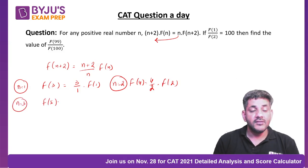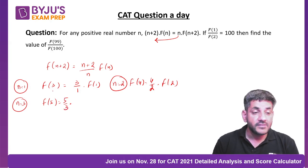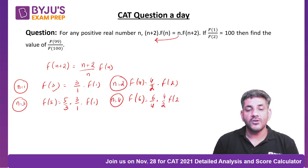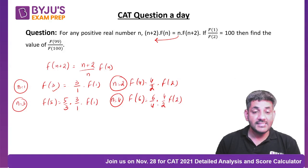Then I put n equals 3, I get f(5) which equals 5/3 times f(3). But f(3) is already 3/1 times f(1). Similarly when I use n equals 4, I get f(6) equals 6/4 times f(4), which is already equal to 4/2 times f(2).